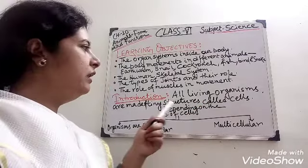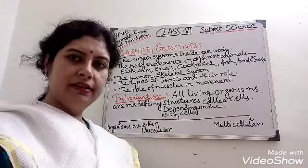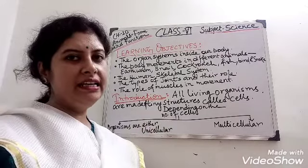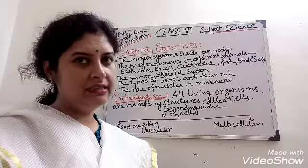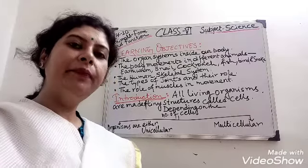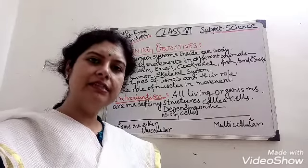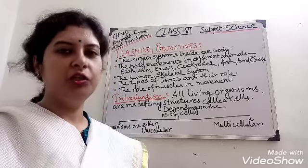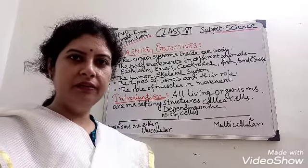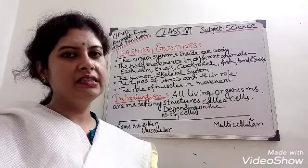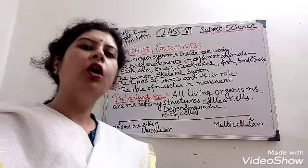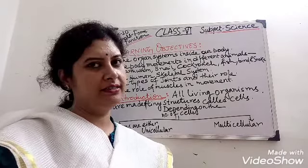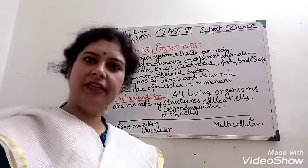All living organisms are made up of a tiny structure called cells. Depending on the number of cells, the organism is either unicellular — meaning it consists of a single cell — or multicellular.